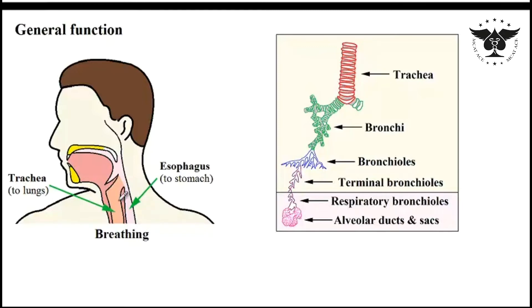Regarding the trachea, it will divide into smaller branches called bronchi, bronchioles, terminal bronchioles until they will eventually become so small and are called respiratory bronchioles and alveolar ducts and sacs.